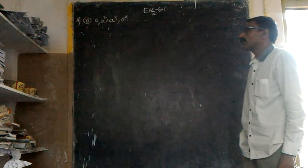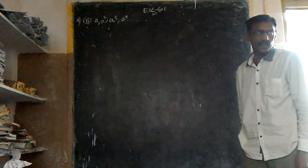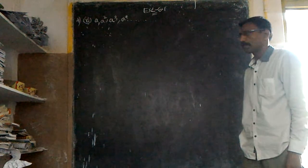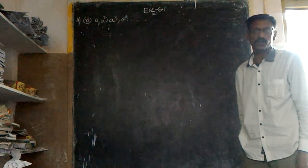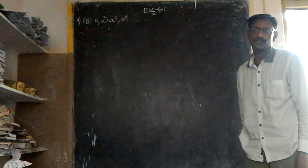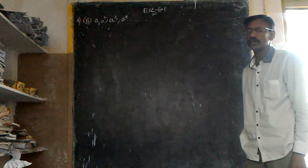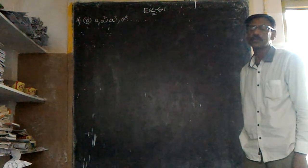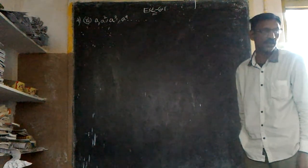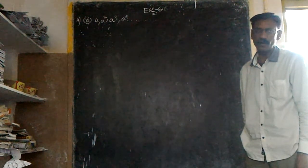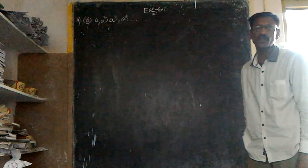A, A squared, A cubed, A to the power of 4, and so on are in A.P. If they are in A.P., find the next 4 terms. That's the question.